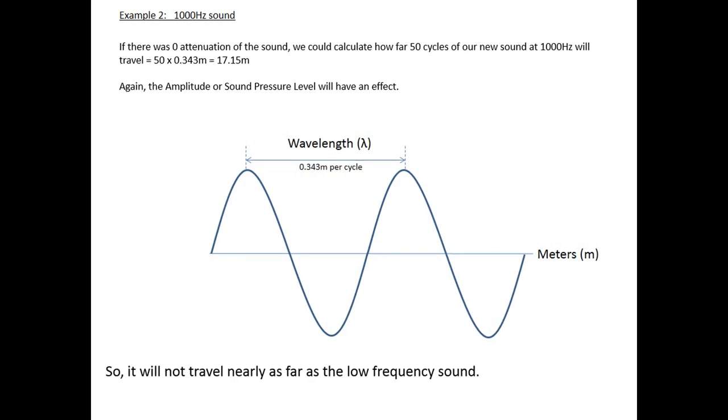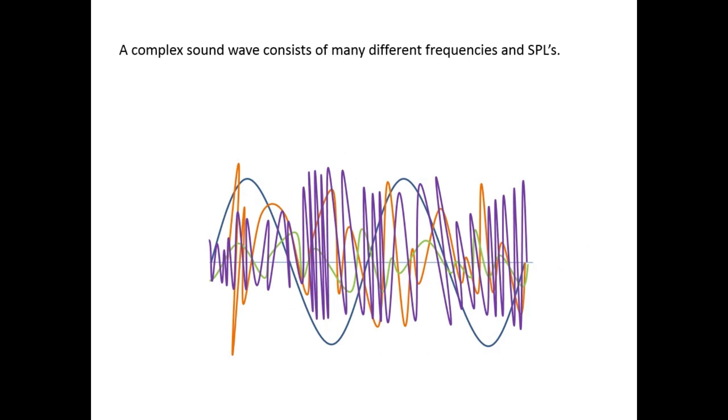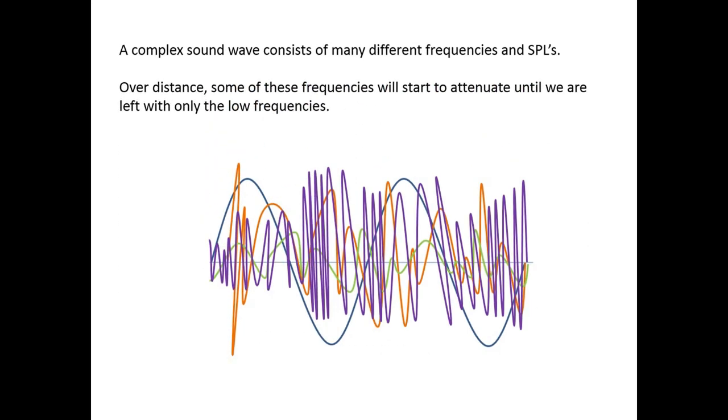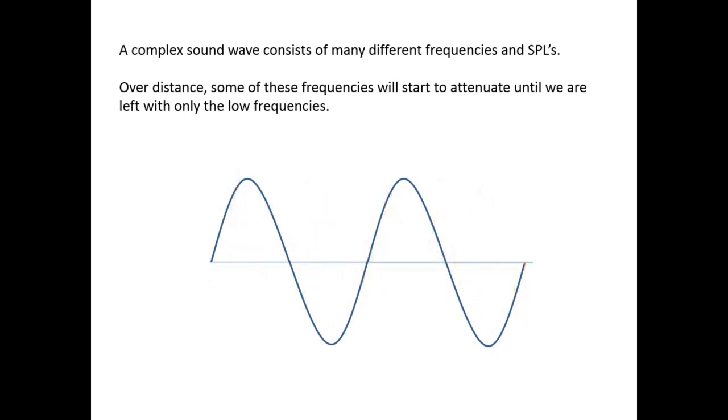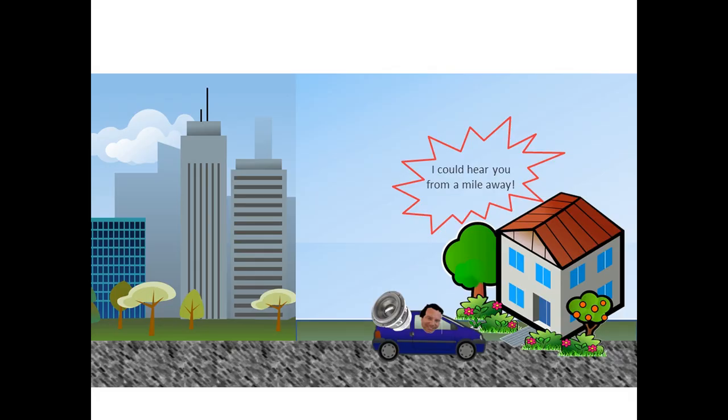So if we look at a very complex frequency wave, like we will have in a normal music track, for instance, there will be a lot of different frequencies and a lot of different sound pressure levels going together with that. Over distance, the higher frequencies will now start to decay until we are left with only the lower frequencies. And that is why my mom could actually hear me from a mile away.